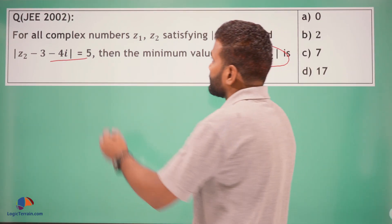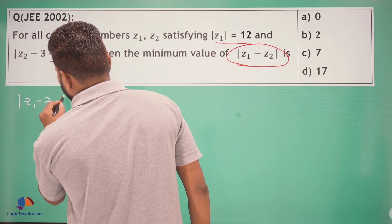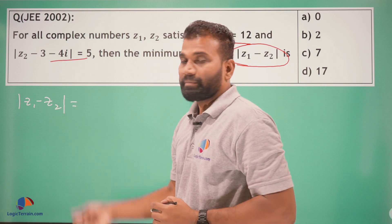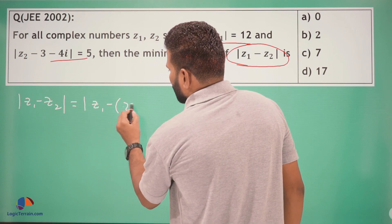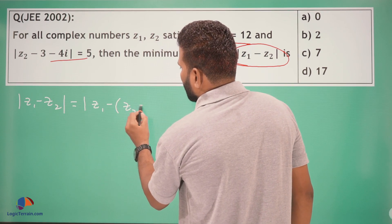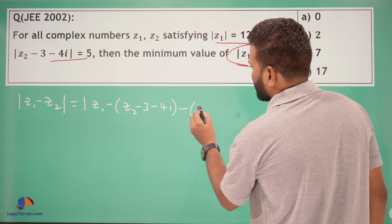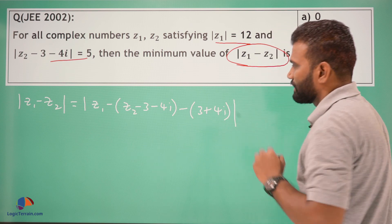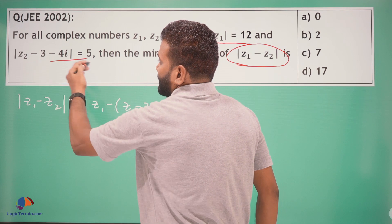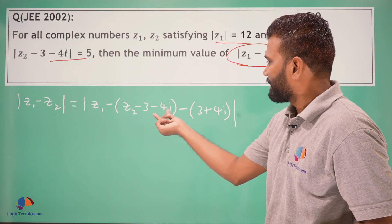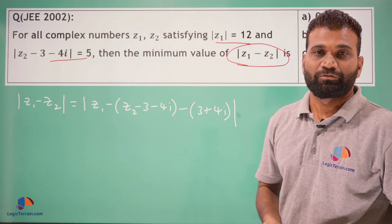So let us consider the required one. Consider modulus of Z1 minus Z2. So we will manipulate this: modulus of Z1 minus Z2 minus 3 minus 4i minus 3 plus 4i. So why we have done this here is to make this statement. Here we have added 3 plus 4i and subtracted 3 plus 4i. Clear?